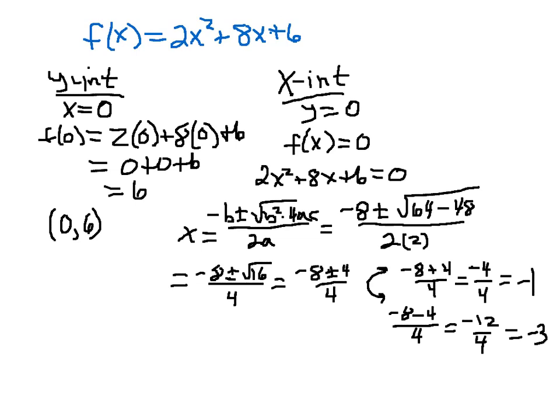So since we have real numbers, we get a minus 1 and we get a minus 3. This is what x is equal to when my output is 0. So I'm actually going to get two points. When x is equal to minus 1, my function is 0. And when x is equal to minus 3, my function is 0.